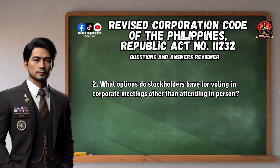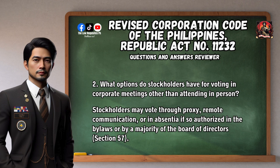Question 2: What options do stockholders have for voting in corporate meetings other than attending in person? Stockholders may vote through proxy, remote communication, or in absentia, if so authorized in the bylaws or by a majority of the Board of Directors. Section 57.